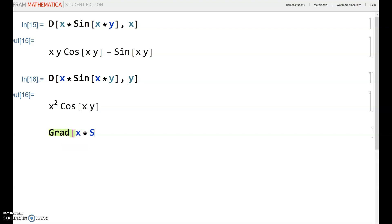Grad, x times sine x times y, comma, then in curly brackets your first variable, comma, then second variable, then closing curly bracket, closing square bracket.